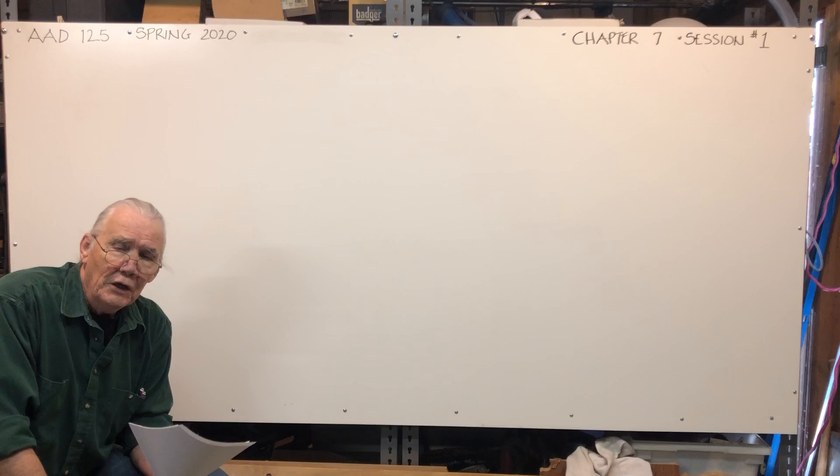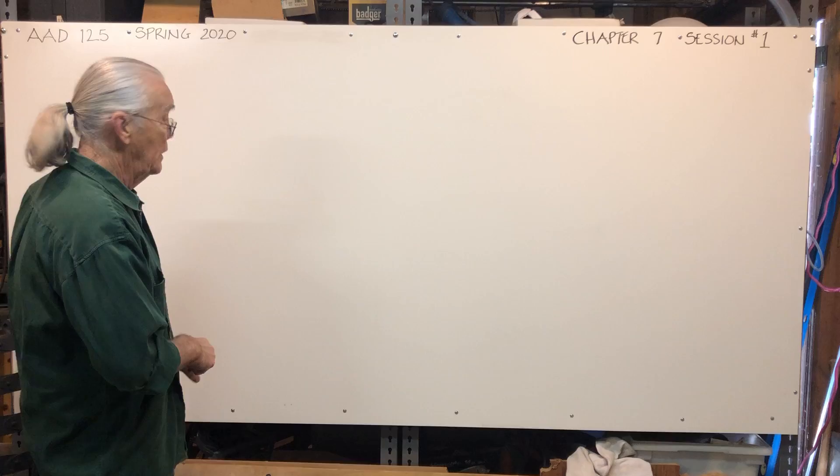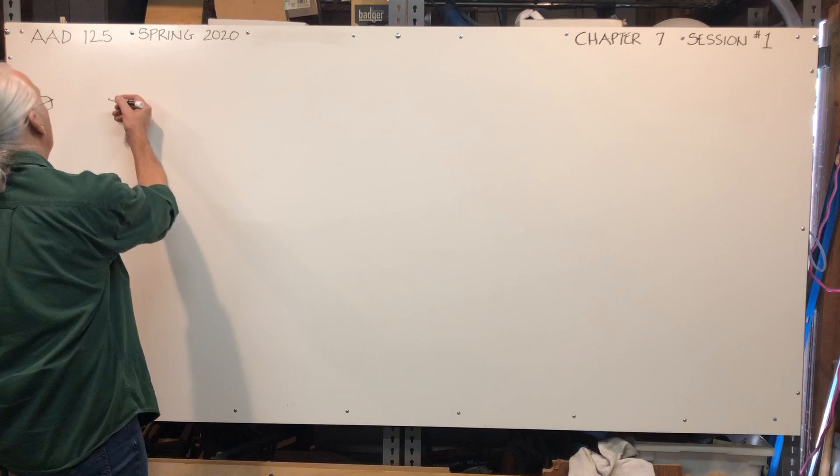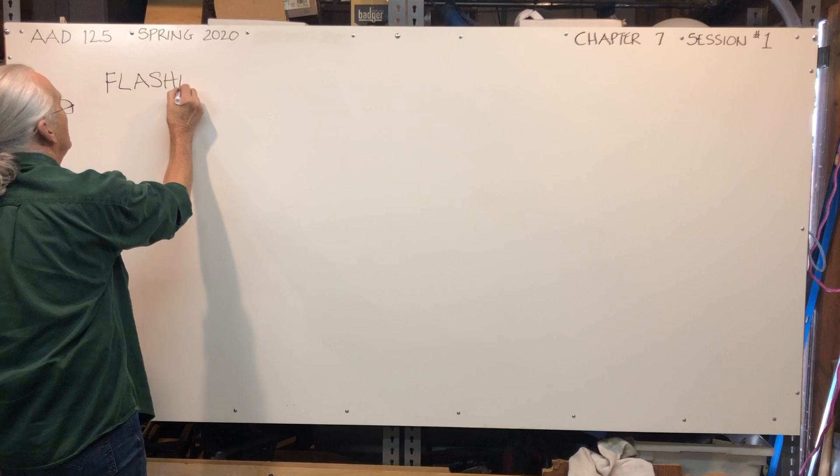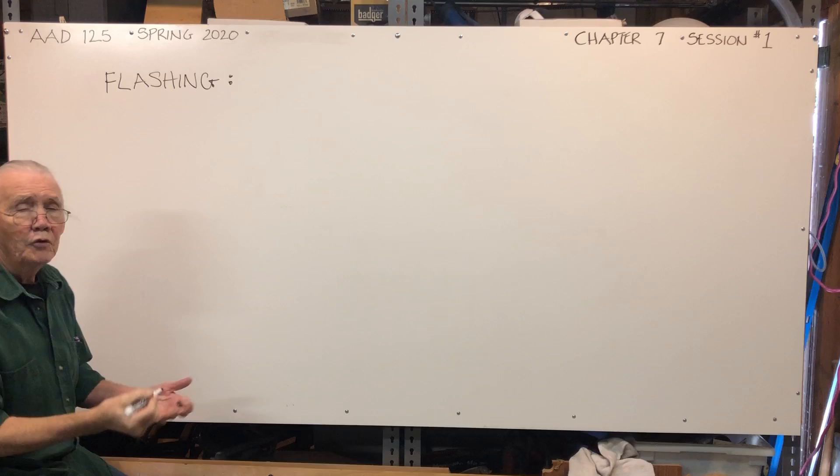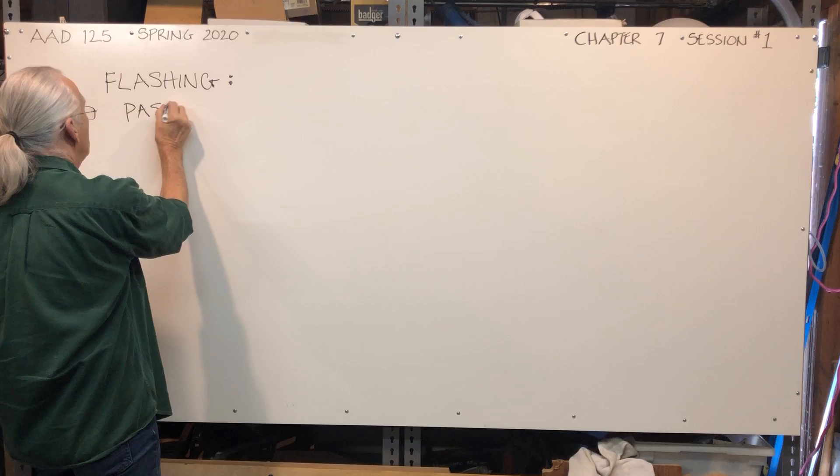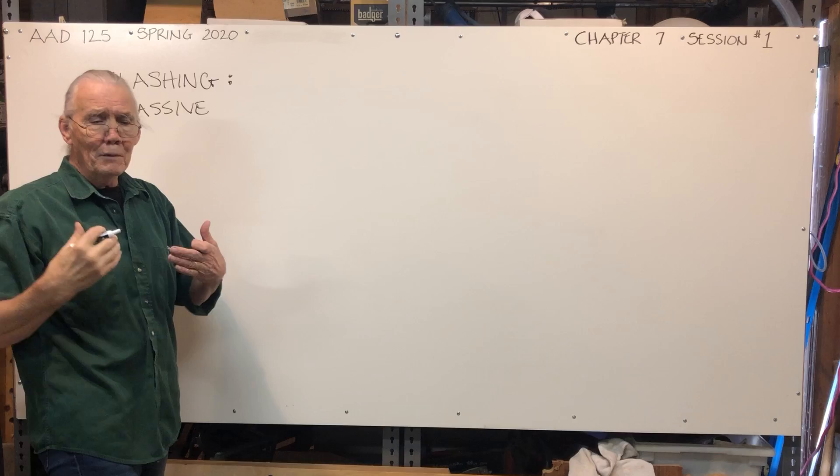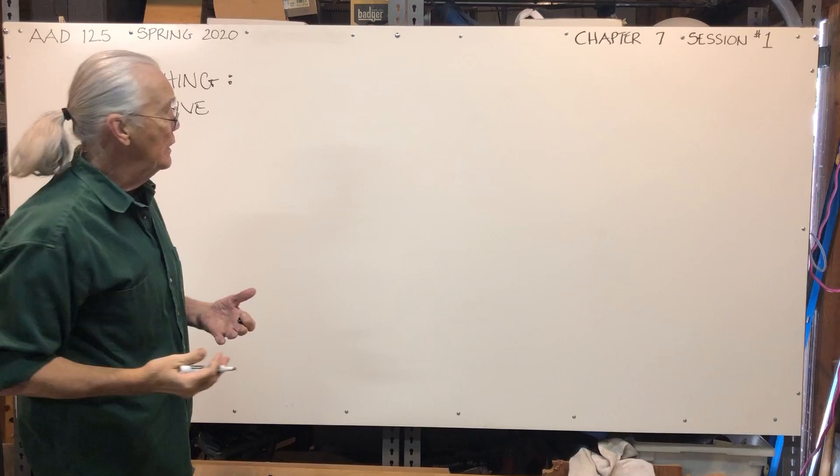Flashing is the first line of defense from water intrusion. There's two types of flashing: there's passive and there's active.